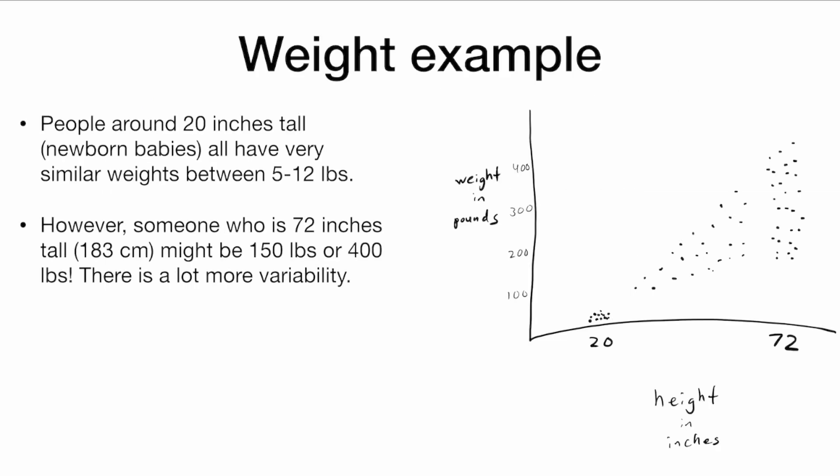So let's look at an example. Here is a scatter plot showing height versus weight. Now what do we notice? Well, people who are around 20 inches tall, those are just newborn babies, and they all have similar weights, maybe between 5 and 12 pounds.